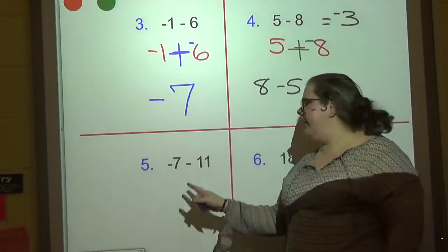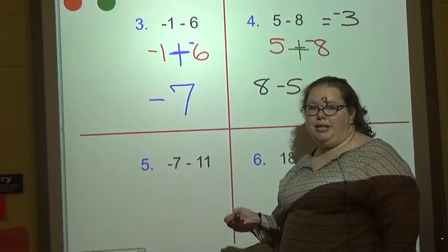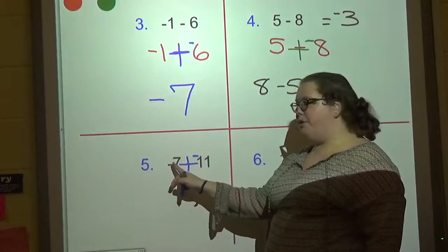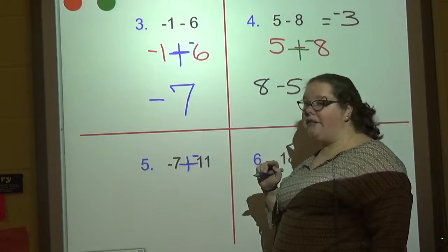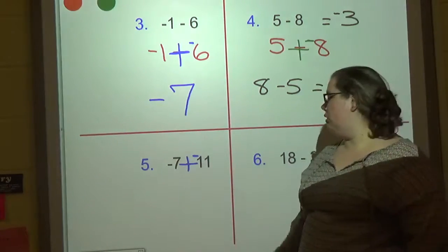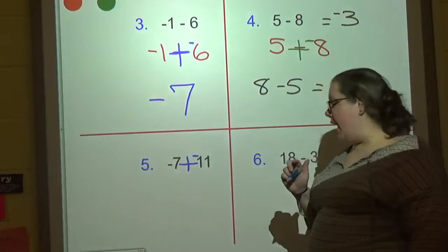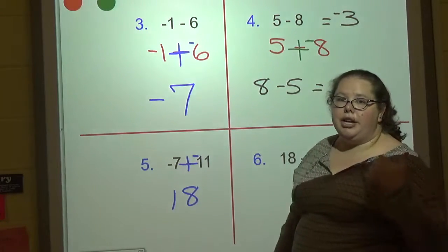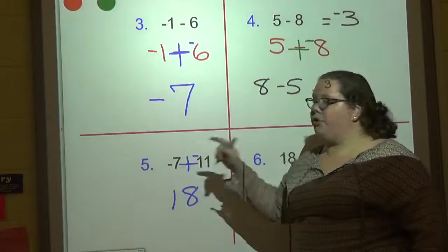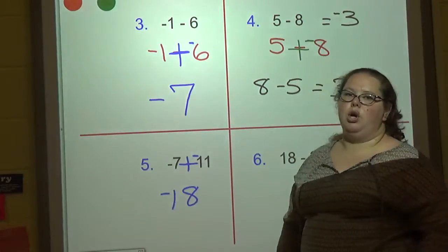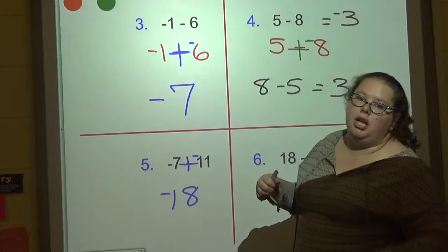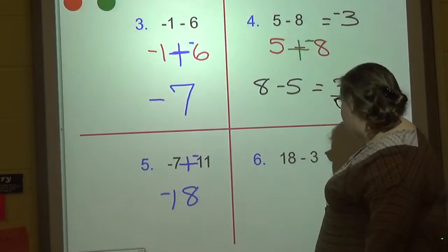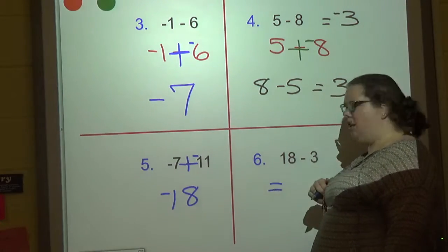Next one: again, first thing — change the minus to a plus and make the number negative. So I have negative seven plus negative eleven. They're the same sign — add: seven plus eleven is eighteen. Since both are negative, the answer is negative eighteen. We dig a hole seven feet deep, then dig eleven more — we're eighteen feet in the ground.